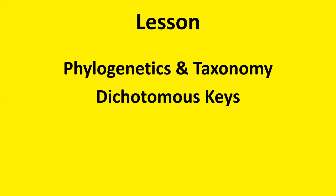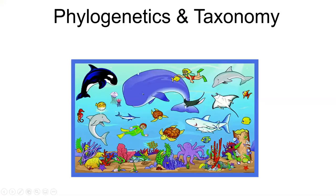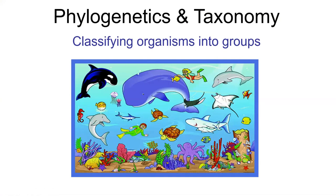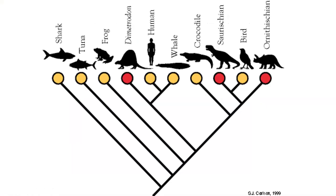Thanks for joining us. We are going to lead today into the new unit of evolution. I'm going to tie it together with genetics, which is the unit we just finished. So we look for similarities between organisms based on their genetics, as well as based on their structures. And when we do this, we call it phylogenetics and taxonomy. We try to group the organisms together and see who's more similar and who's more different, and we organize it so that we can study their evolutionary relationships.